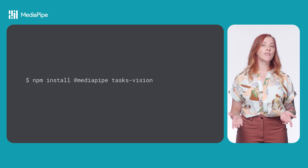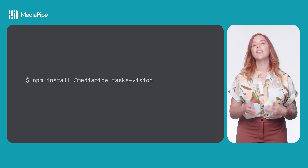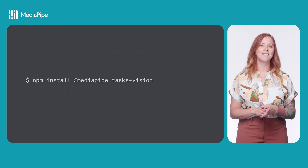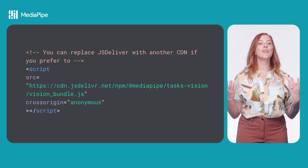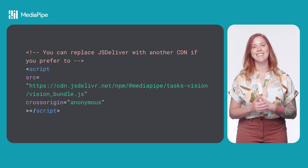Now that you've chosen a model, install the TasksVision package. You can download the package using NPM and use a JavaScript compilation tool like Webpack, or you can import the package using a CDN.